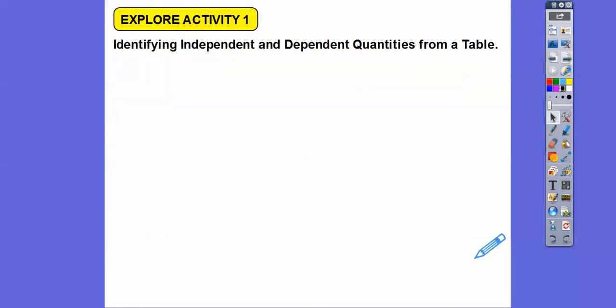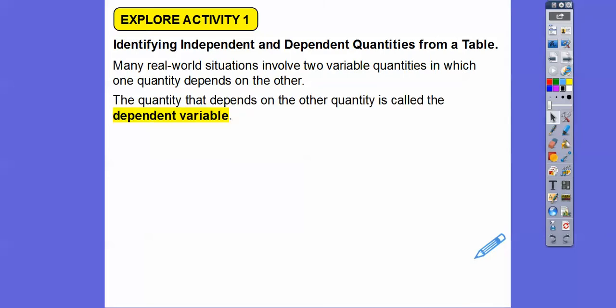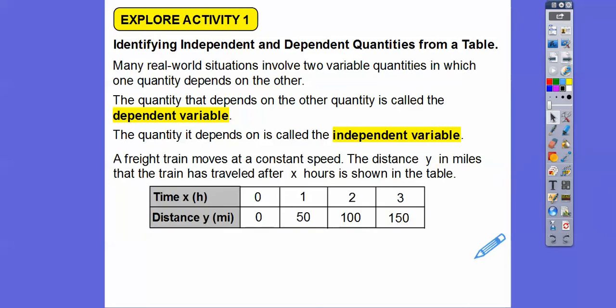Identifying independent and dependent quantities from a table. There are many real-world situations that involve two variable quantities in which one quantity totally depends on the other. The quantity that depends on the other is called the dependent variable, and the quantity it depends on is called the independent variable.